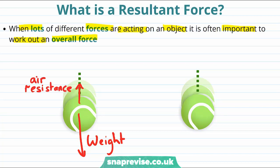Our point here is that we have two different forces acting on the tennis ball in opposite directions, but they have different magnitudes. In particular, in this case the weight is a larger force than the air resistance, so there's going to be an overall but smaller force pointing downwards.